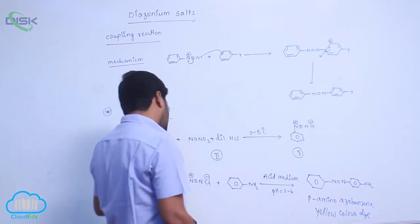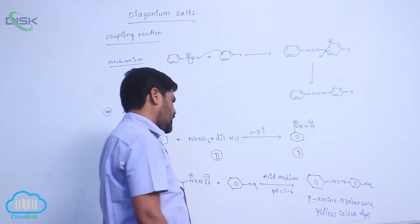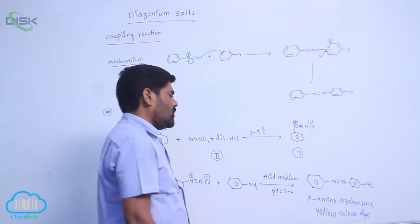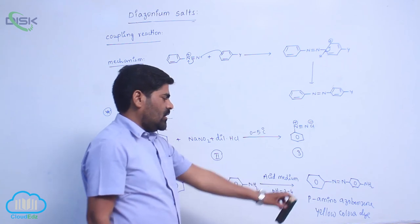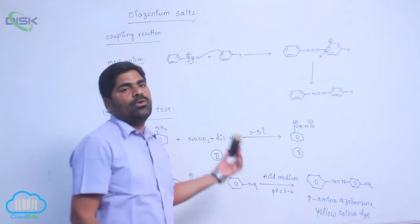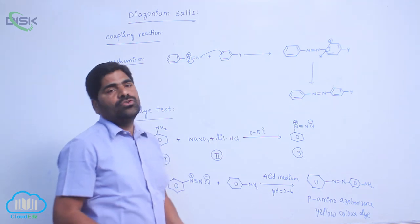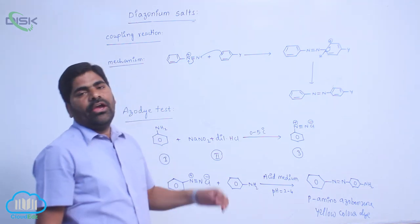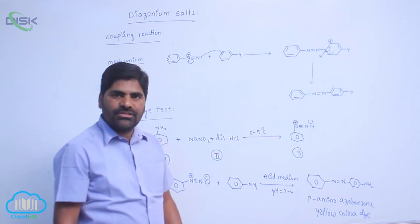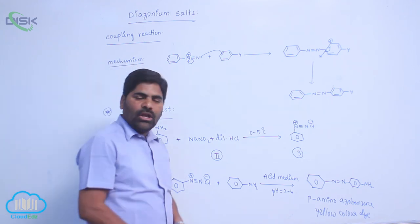So therefore, when benzene diazonium chloride reacts with aniline in acidic medium to form para-amino-azobenzene, it is a yellow color dye. This particular test is known as what? Azo dye test. So by using azo dye test, aniline is identified in the laboratory or aniline is distinguished.